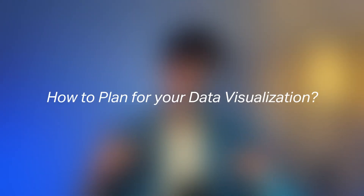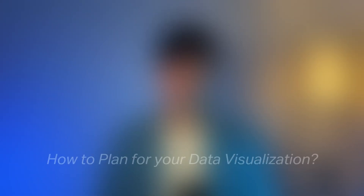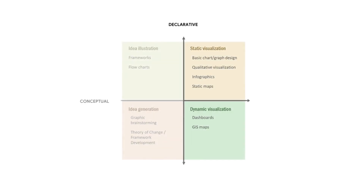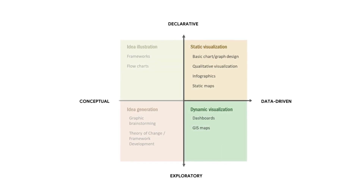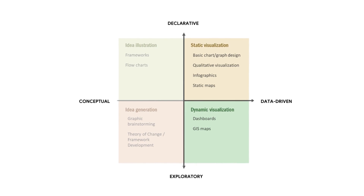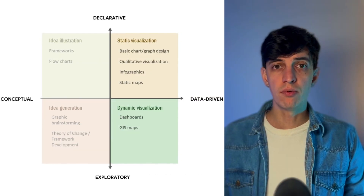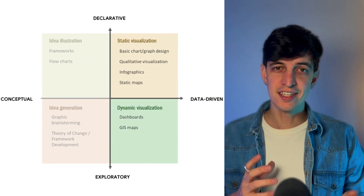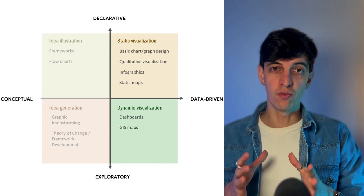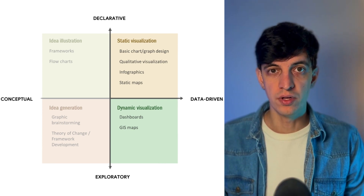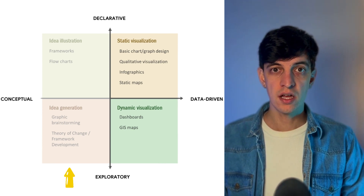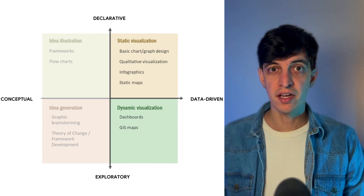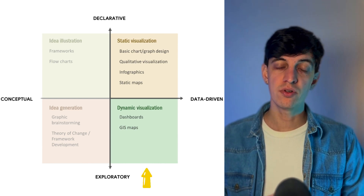Now that we understand why we visualize data, let's see how to plan for your data visualization. Here I want to show you a matrix that plots types of visual communication on two axes. Simply put, when you are in the planning stages of data visualization, you will fall more onto the left-hand side of this matrix, whereas when you are implementing and building reports and dashboards, you will fall into the right-hand side.